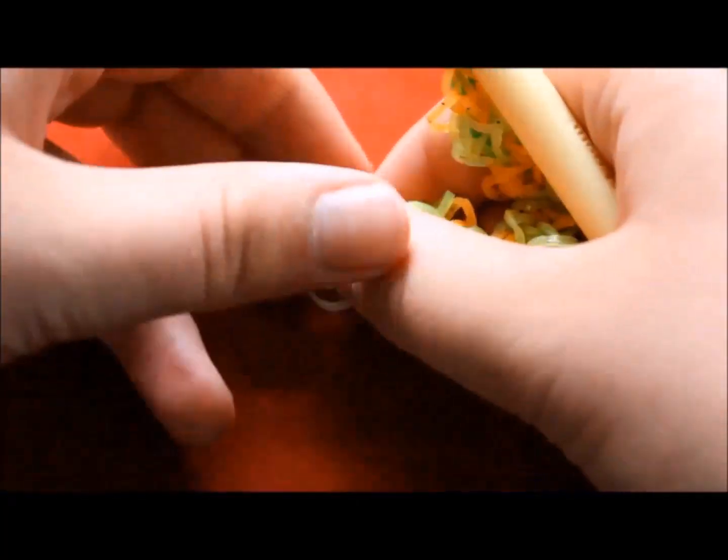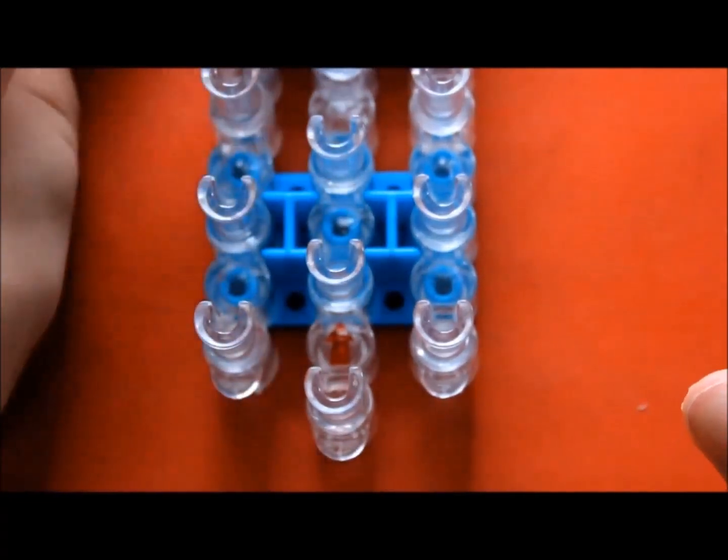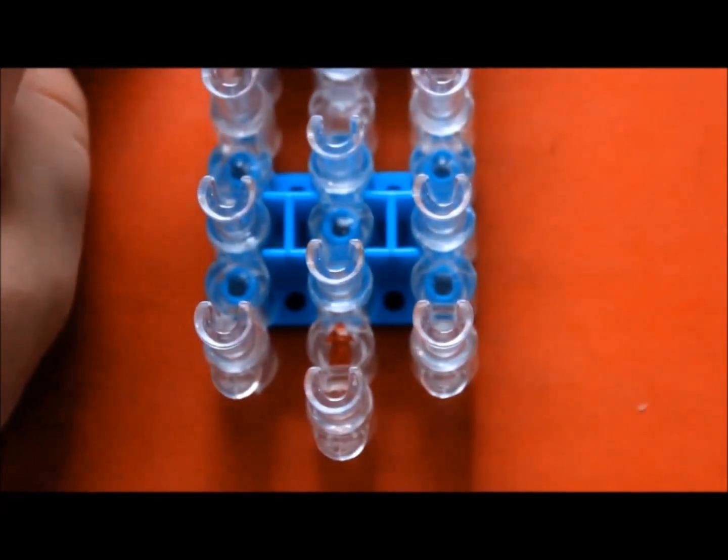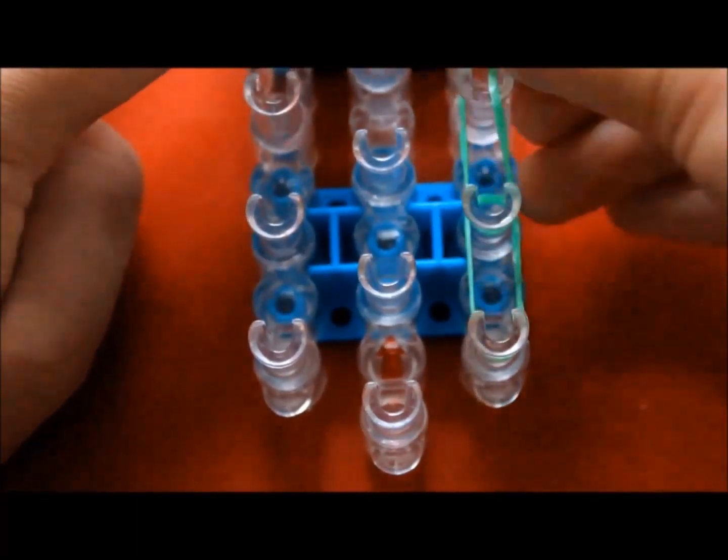Now you have to make the extension. Turn your loom so that the red arrow is pointing away from you and form a single chain on one side of your loom.